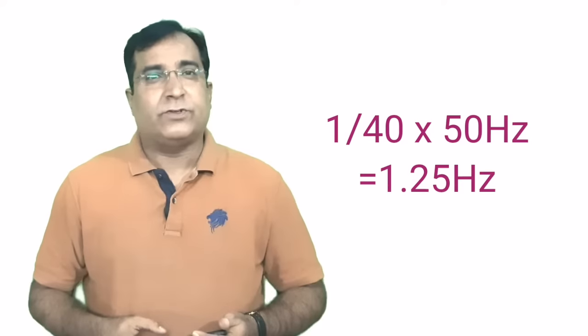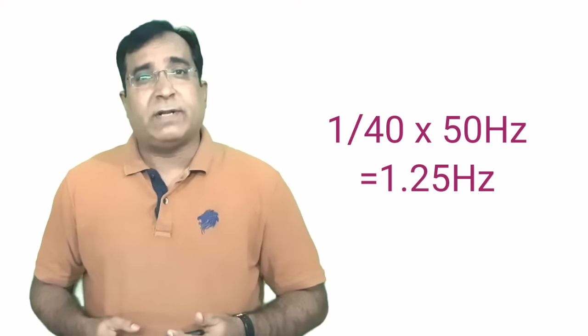Speed control range in V/F mode is in the range of 1 is to 40. That means if we multiply this ratio by the maximum frequency 50 hertz, then it comes out to be 1.25 hertz. VFD cannot control the speed below this.